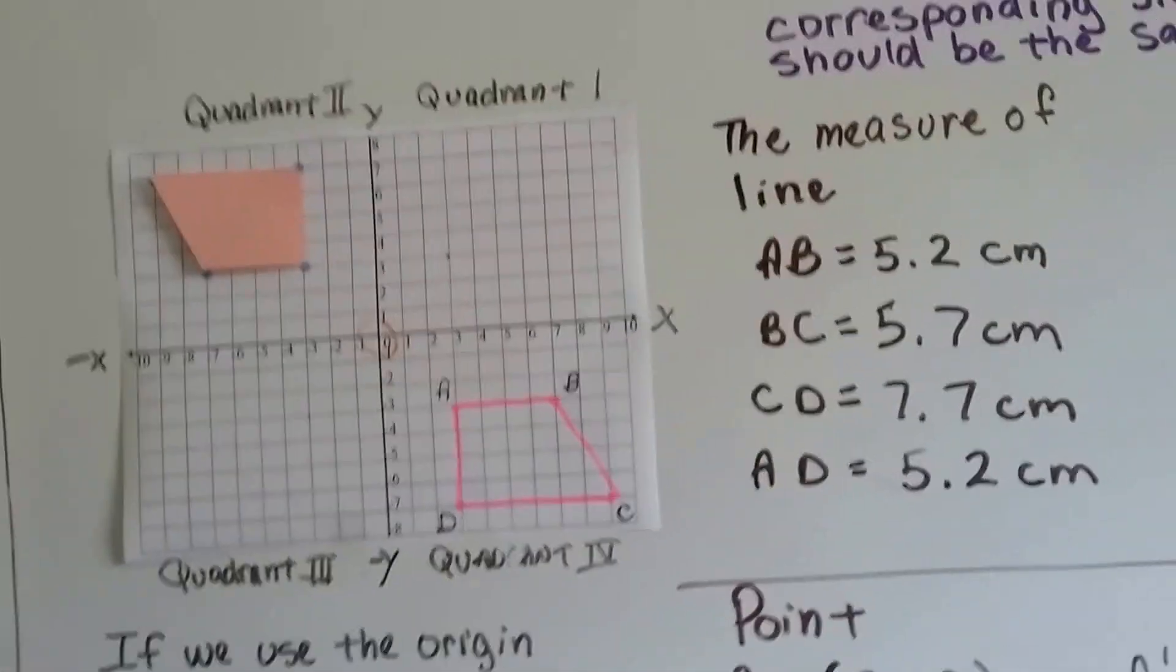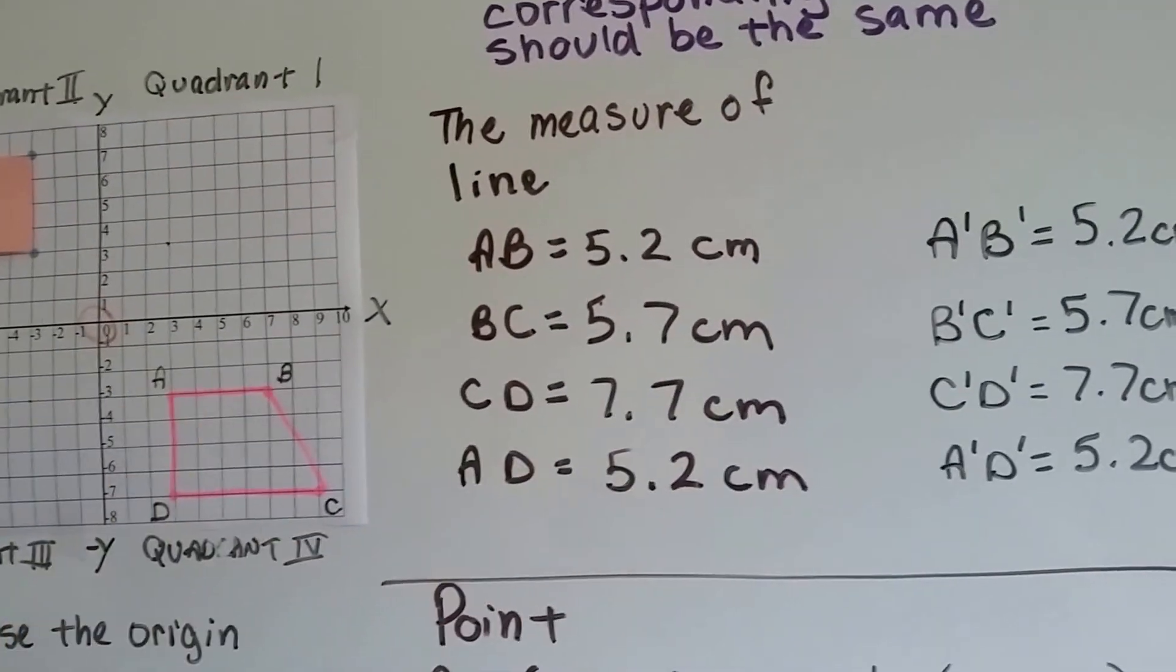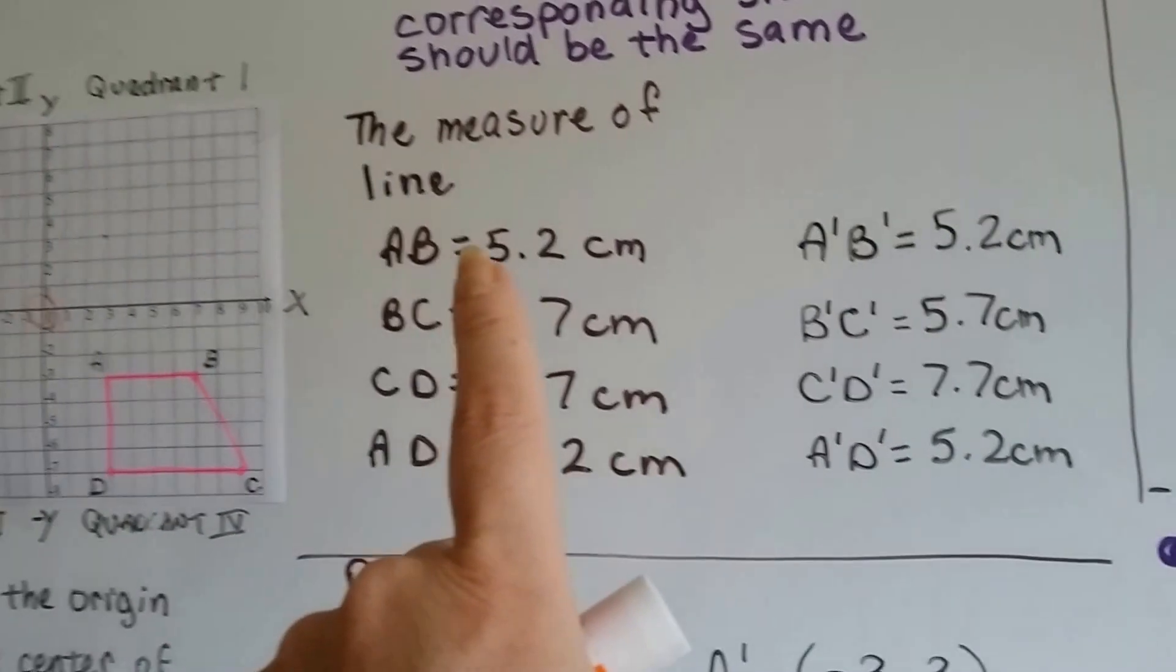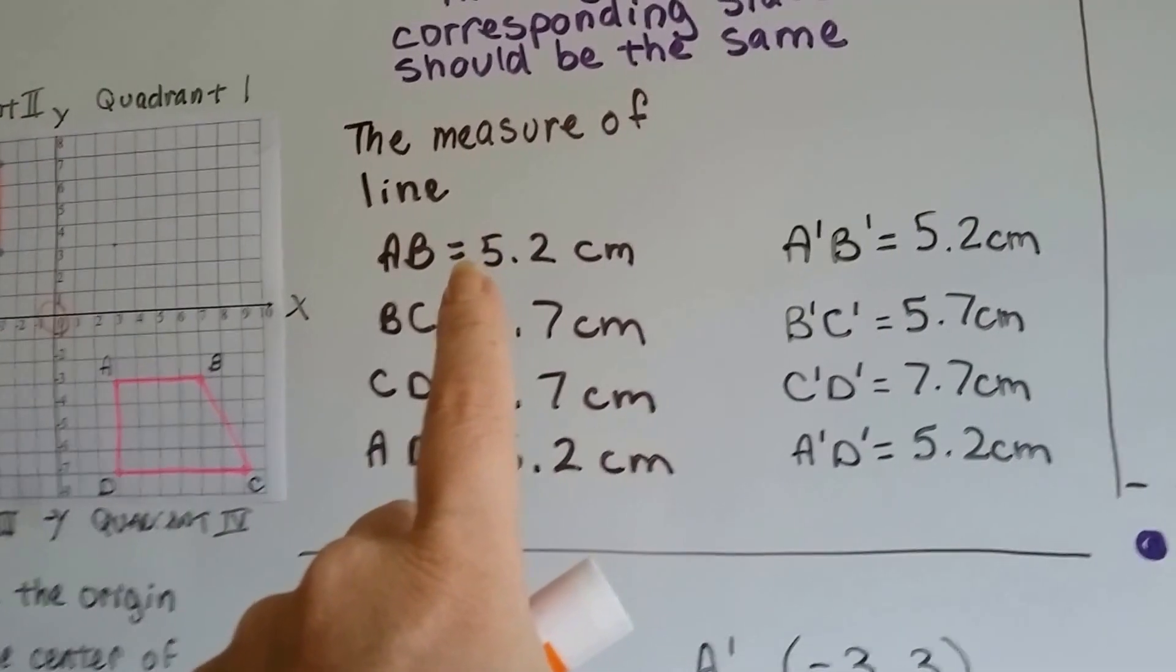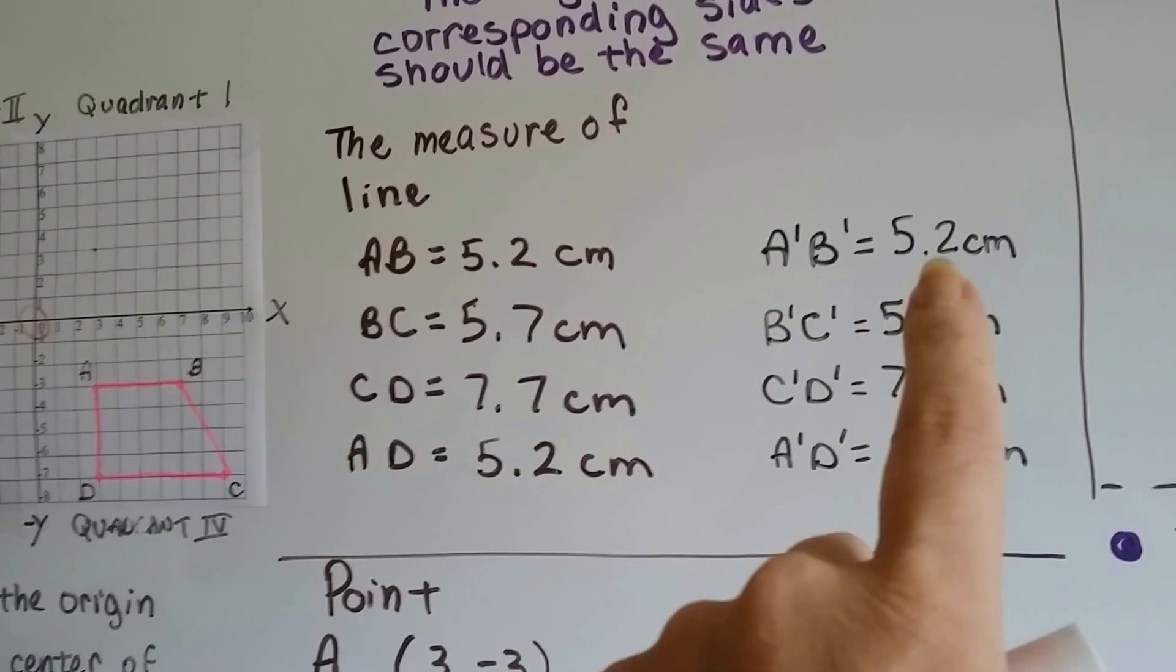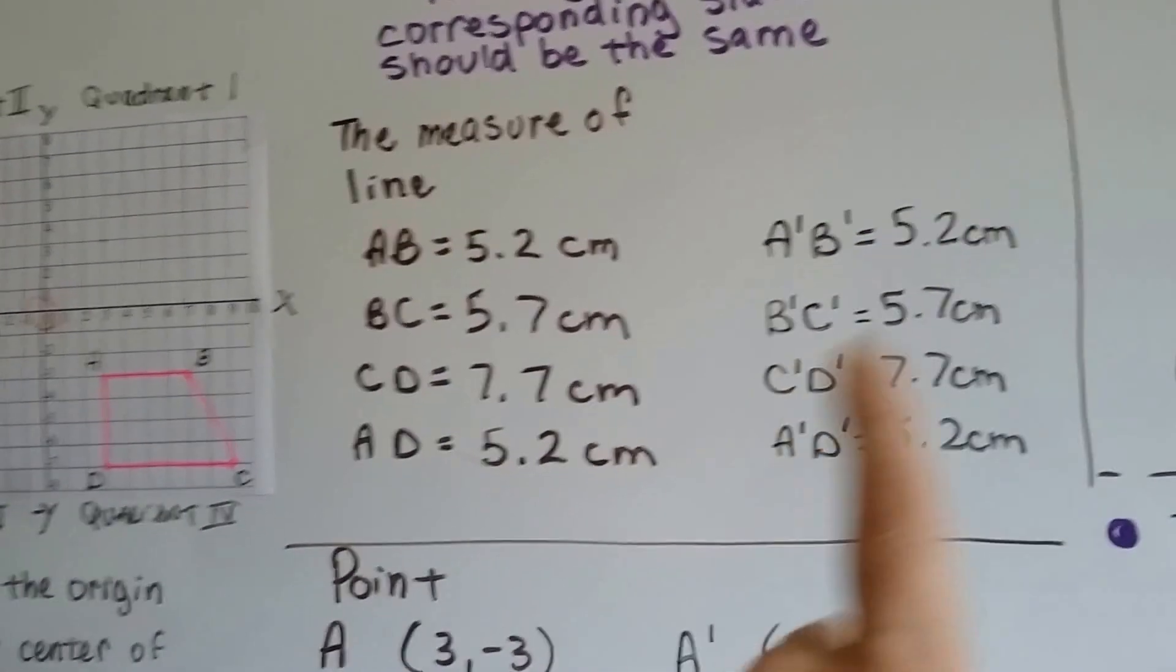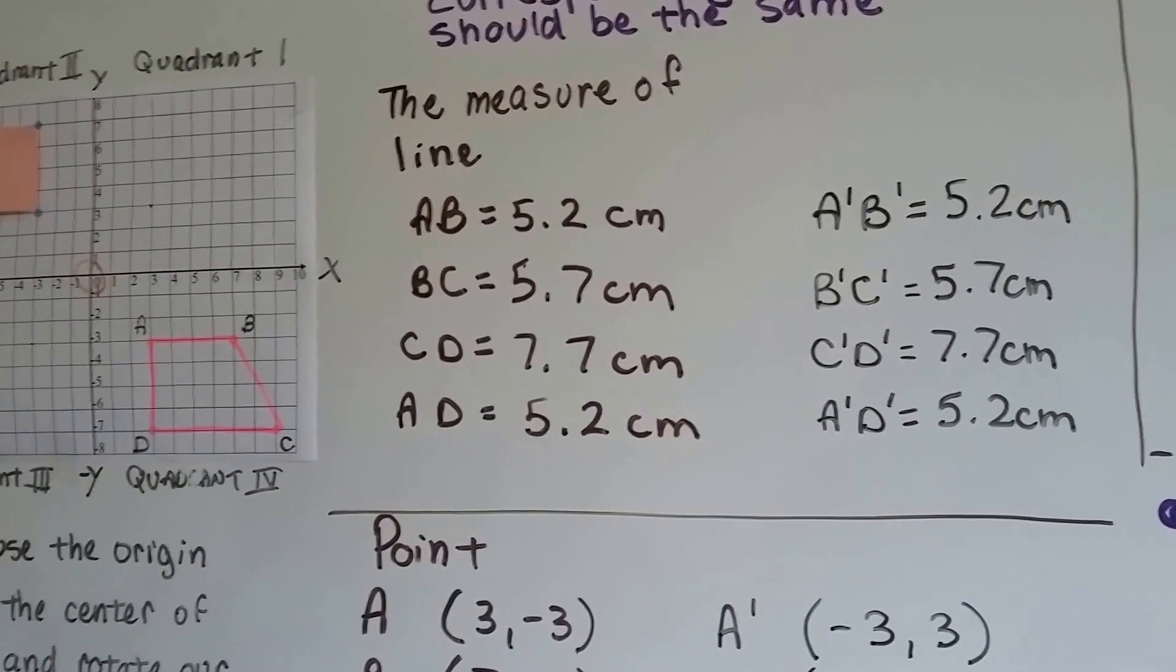When we measure the sides of the lines, like AB and BC and CD and AD, we see that with the original image, the pre-image figure, the measurements are the same as A prime, B prime - as the image. The original is the same measurements as the image.